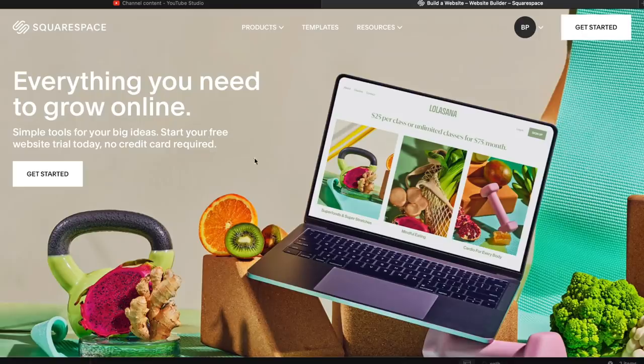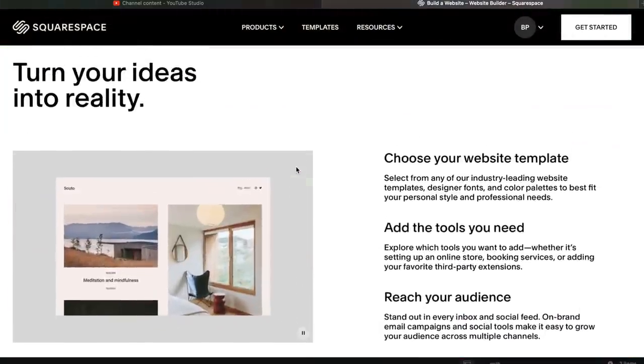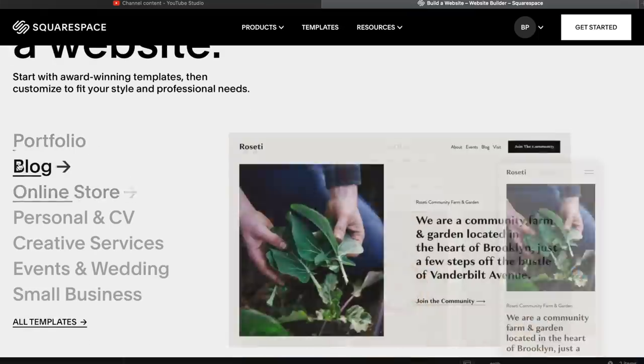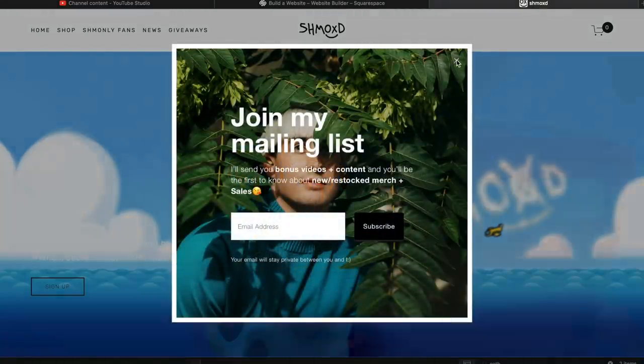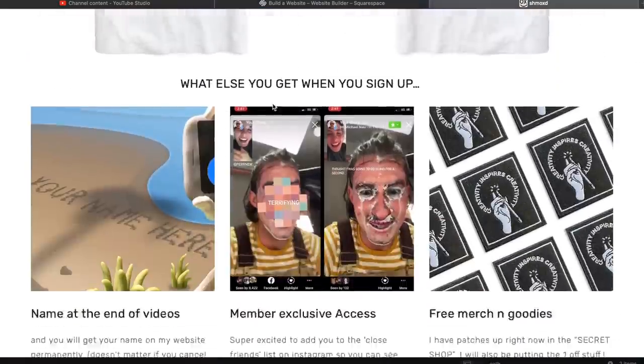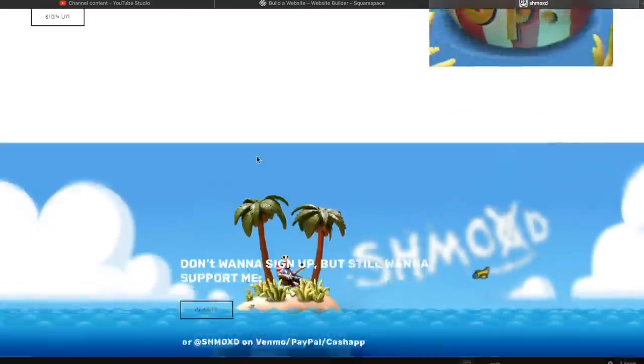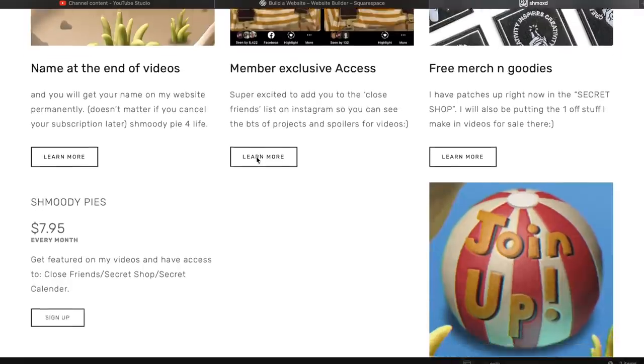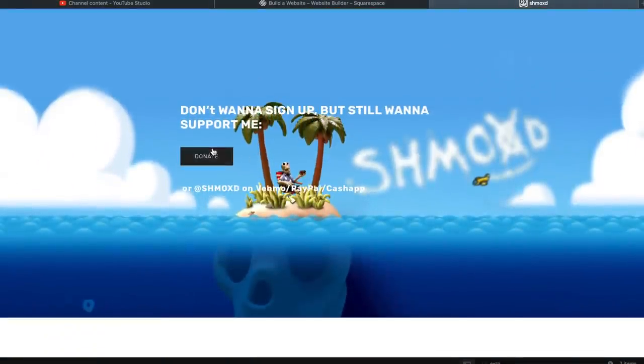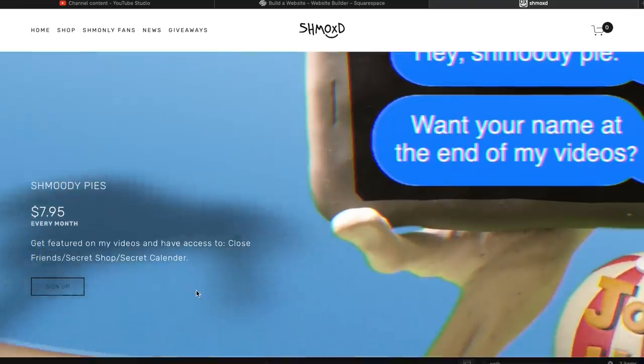Big thanks to Squarespace for sponsoring today's video. Squarespace is your one-stop shop for all things website - whether you want a domain, a blog, an online shop, literally anything. They have the tools so you can make it look professional, on-brand, and super user-friendly. For me, something really important is UI/UX - user interface and user experience - meaning how easy it is for someone to go through your website and know what to do, and how pretty it looks.